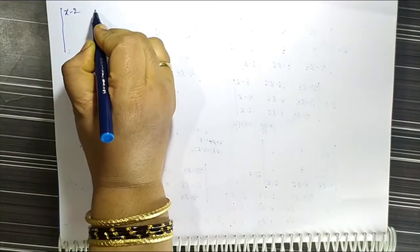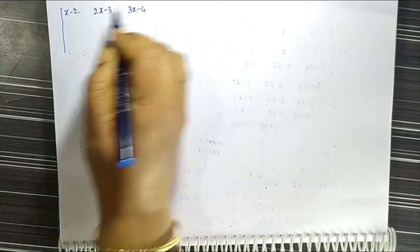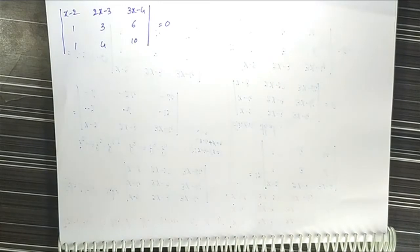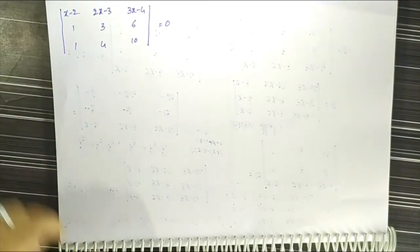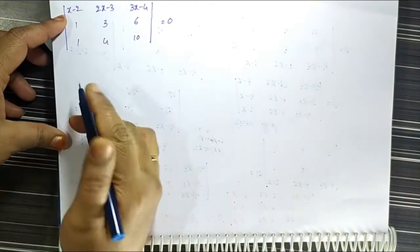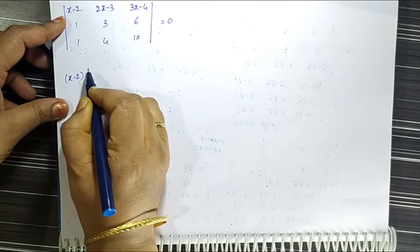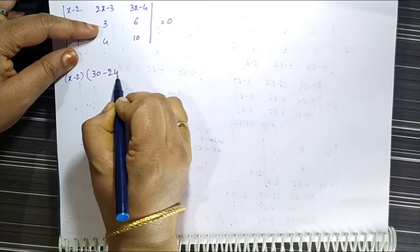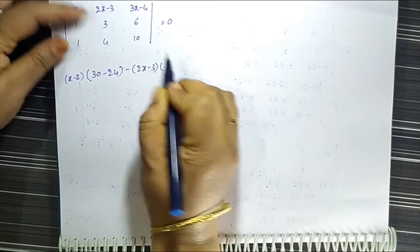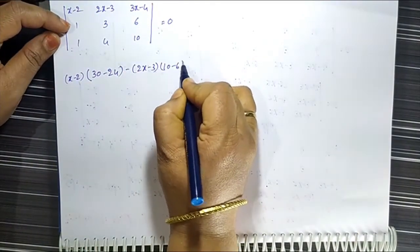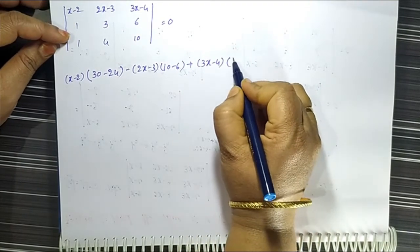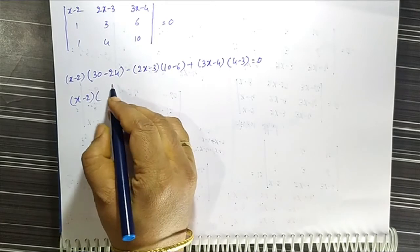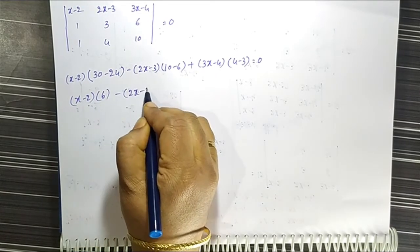Now we expand the determinant of x-2, 2x-3, 3x-4; 1, 3, 6; 1, 4, 10 along the first row. This gives: (x-2)(3·10 - 6·4) minus (2x-3)(1·10 - 6·1) plus (3x-4)(1·4 - 3·1) equals zero. Simplifying: (x-2)(6) minus (2x-3)(4) plus (3x-4)(1) equals zero.